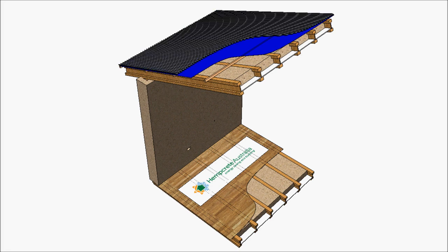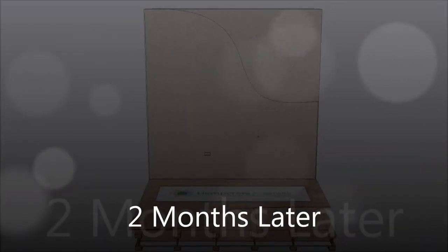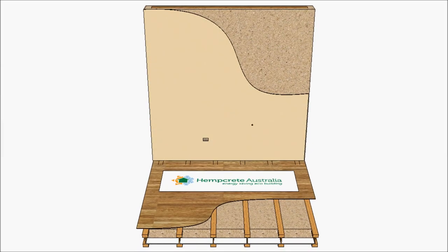The hempcrete walls need to be dry prior to application of renders. This takes approximately two months. The exterior wall surface will be rendered with a lime render.